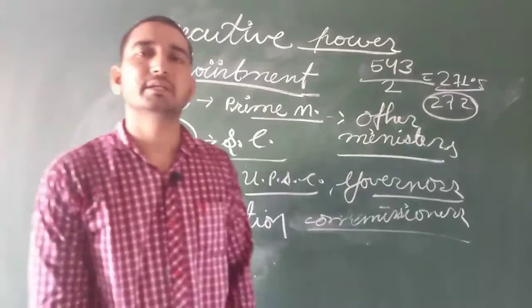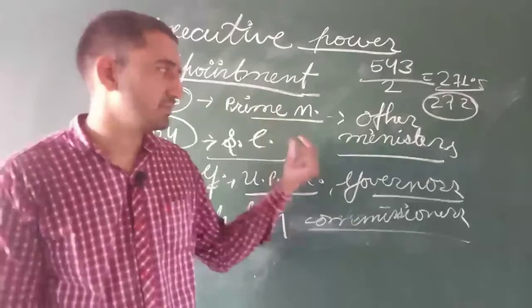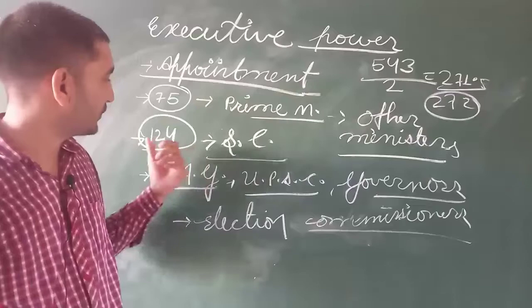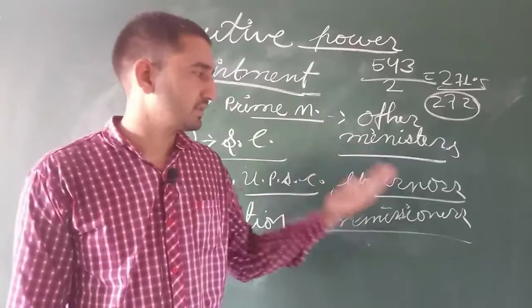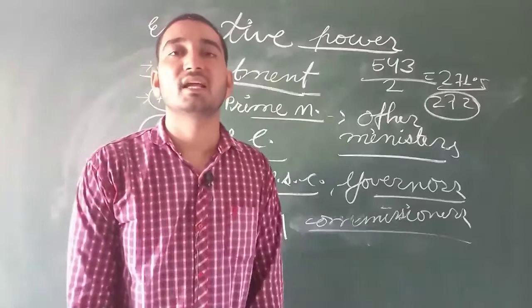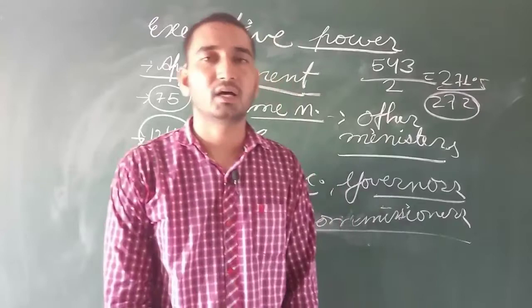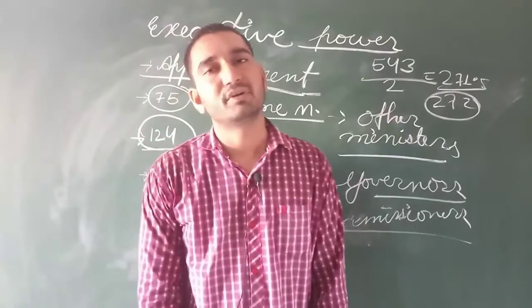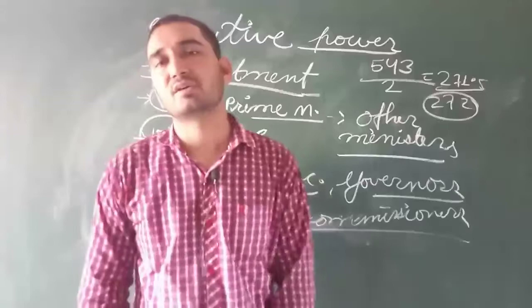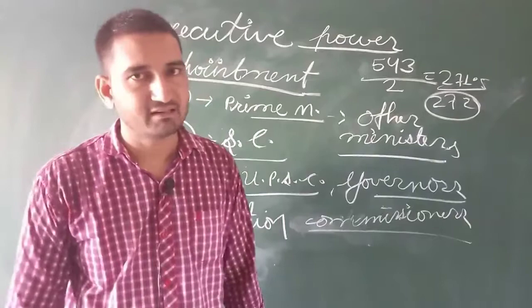So, when we discuss the President's power of appointment, the major officers appointed by the President include: the Prime Minister, other ministers on the advice of the Prime Minister, judges of the Supreme Court, judges of the High Court, Comptroller and Auditor General, Chief of UPSC, Governors of States, Chief Election Commissioner, and other Election Commissioners. In addition, the CBI Chief, CBAC Chief, NCERT Chief - they are all appointed by the President on the advice of the Council of Ministers.